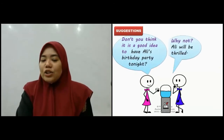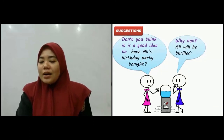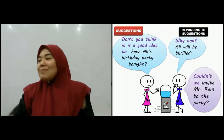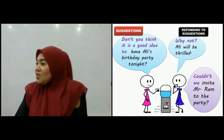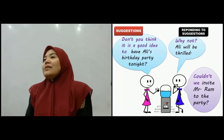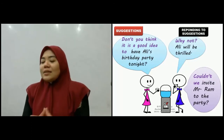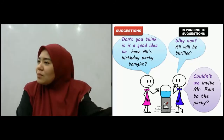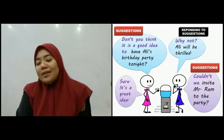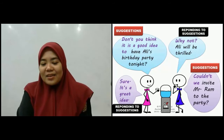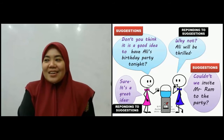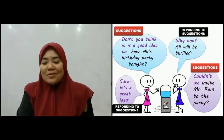Another suggestion: 'Don't you think it's a good idea to have Fahmi's birthday party tonight?' Response: 'Why not? Fahmi will be thrilled — he'll be very excited!' And then perhaps you might want to invite someone, so you give another suggestion: 'Couldn't we invite Miss Nurul to the party?' Sure, it's a great idea — Amira and Zahira are very happy to throw a birthday party for Fahmi.